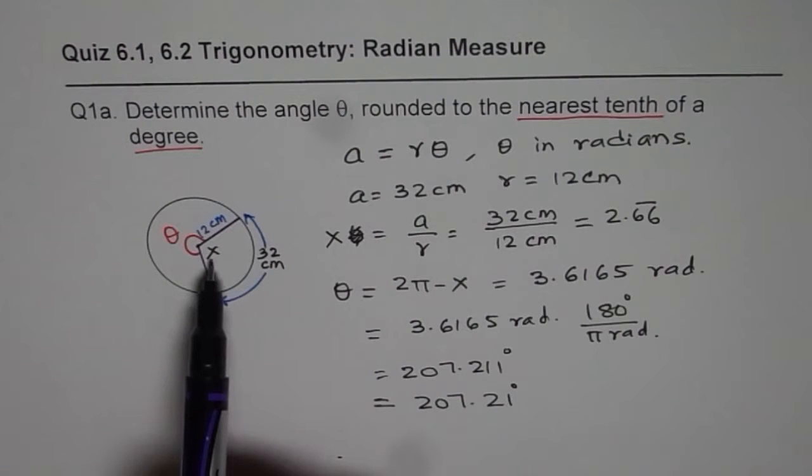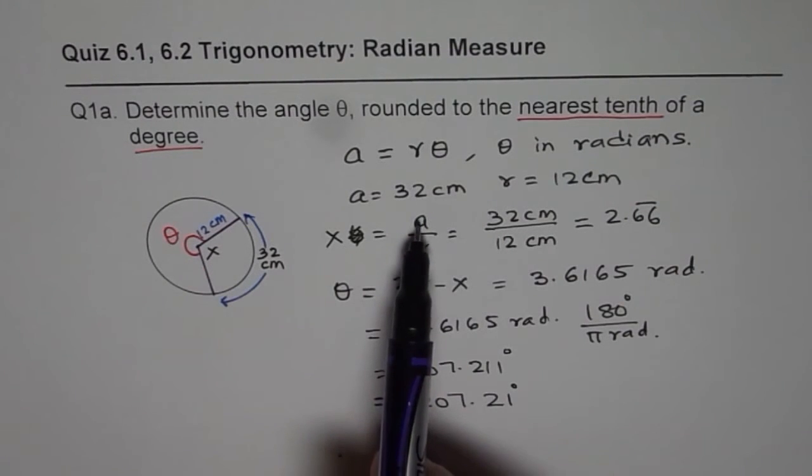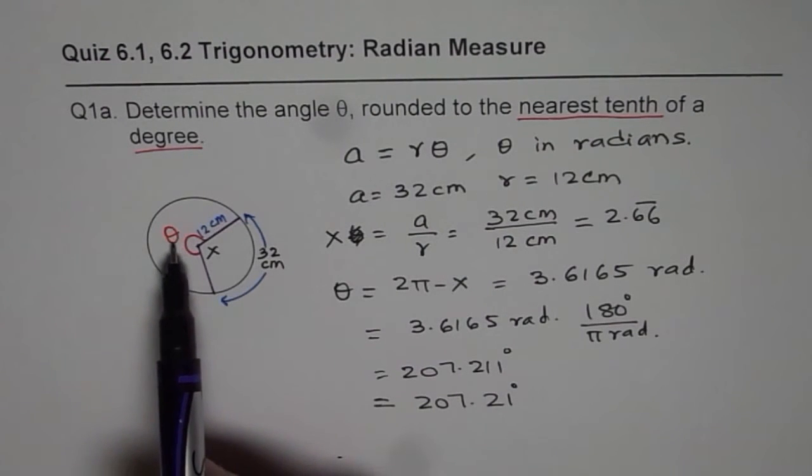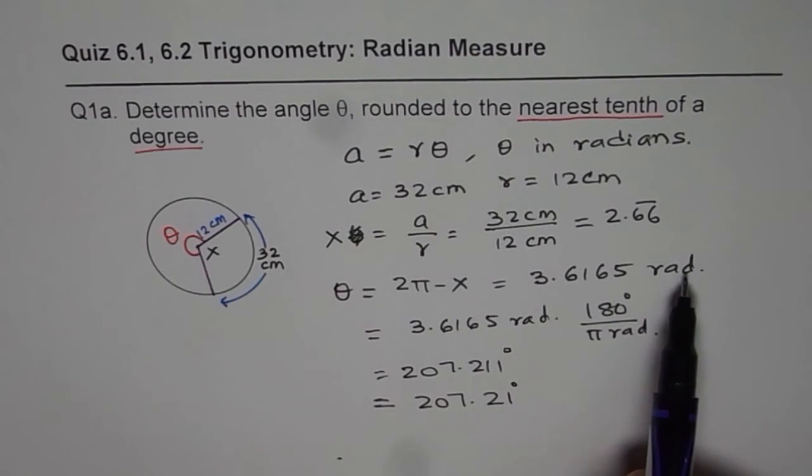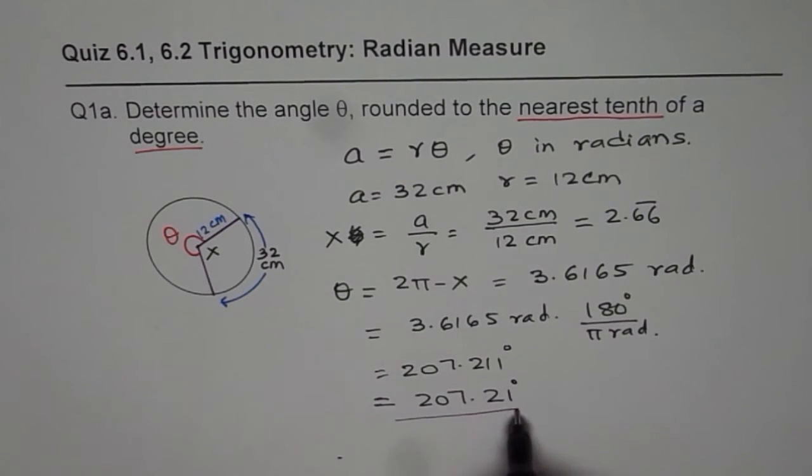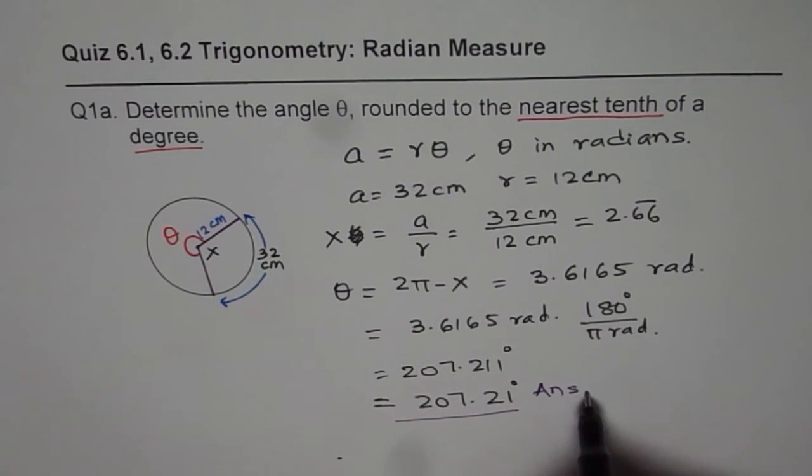That angle can be calculated using the ratio of arc length to radius. And then you take away this angle from 2π to get the angle required. That value is in radians, and then convert radians to degrees to write your final answer. That becomes the answer for us.